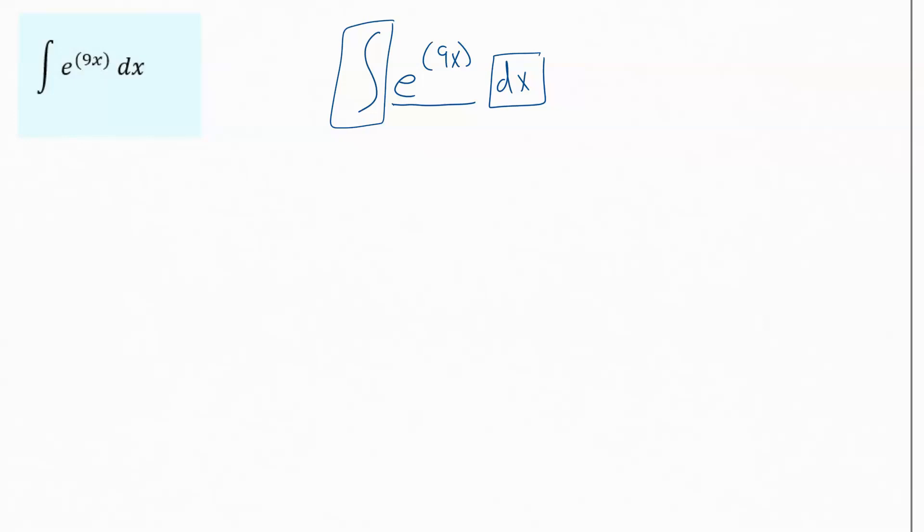Just like when you were working with derivatives, there were certain things you just had to have memorized, like the derivatives of sine and cosine and the derivative of e. These were things that you just had to know.